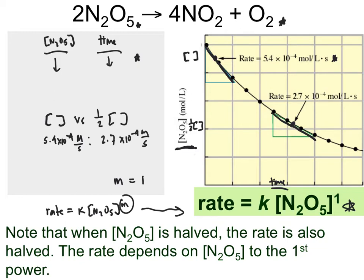One more important point: the rate law we established experimentally is first order with respect to N2O5. Notice that the coefficient in front of N2O5 in the balanced equation is 2. We do not use coefficients to establish our orders of reaction — that must be established experimentally. Please make sure you are never using the coefficients in front of an equation to give the orders for a specific reaction.